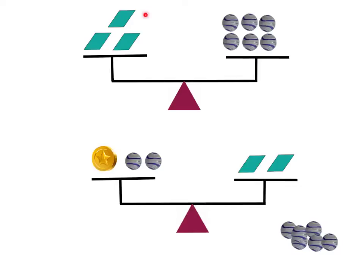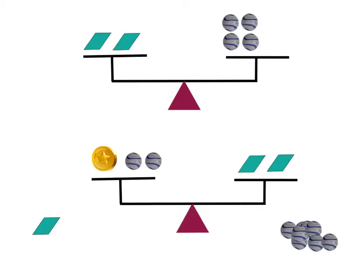We have three parallelograms and six marbles. So what I'm going to do is divide by three on each side — I can take away a third of the parallelograms, that's one, and I'll take away a third of the marbles. Then I'm going to take away another parallelogram and another two marbles. So now I know that one parallelogram is equal to two marbles.